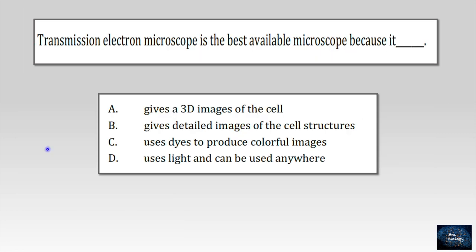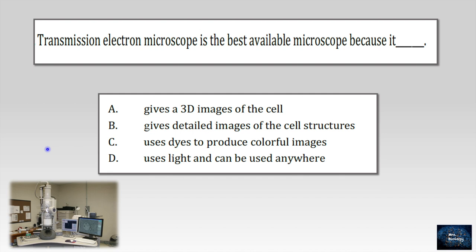In this question, transmission electron microscope is the best available microscope because we all know this type of microscope lets the electron beams pass through the specimen. So if we look at the other choices, we'll find choice B is the right one. It gives detailed images of the cell structures. So this is the right answer.